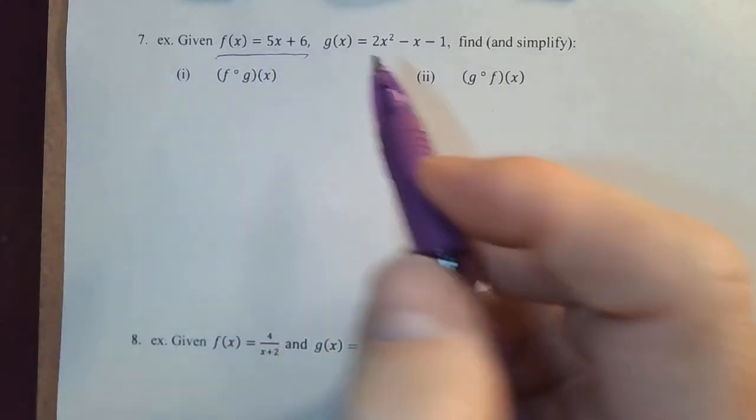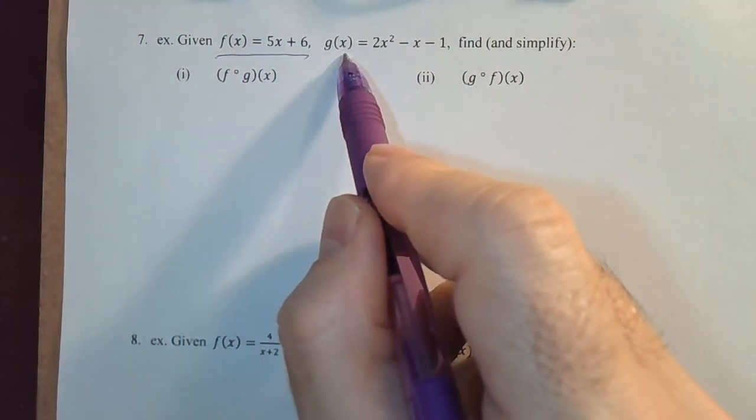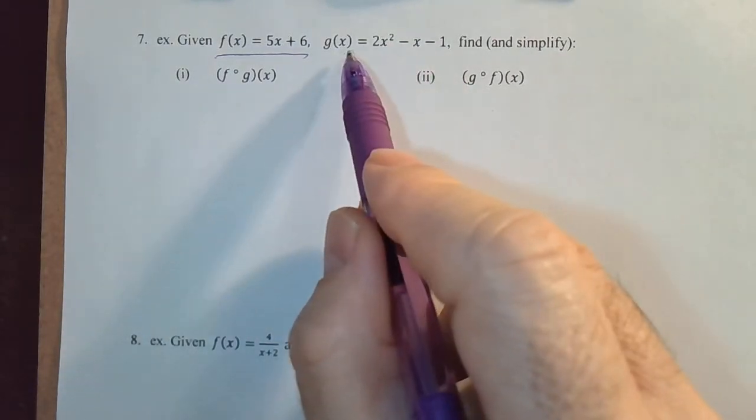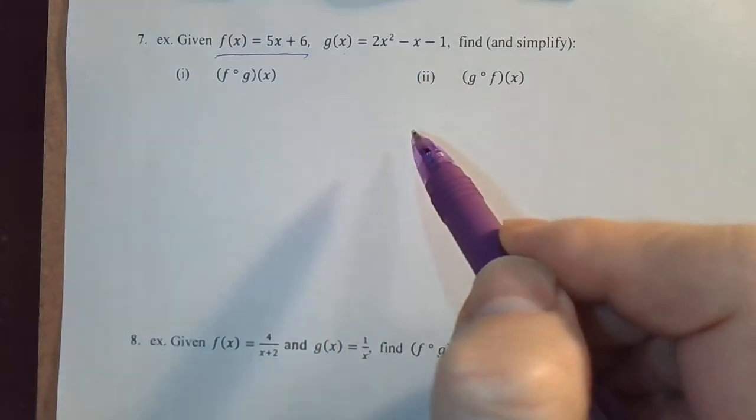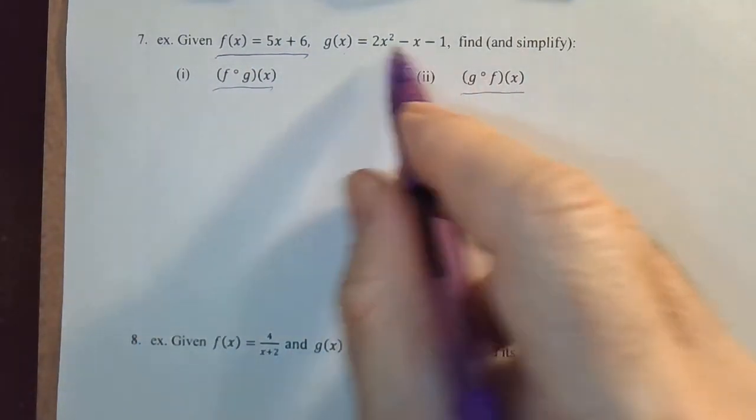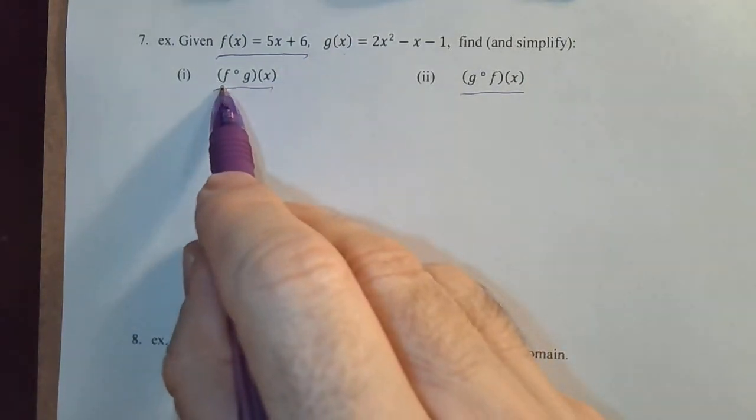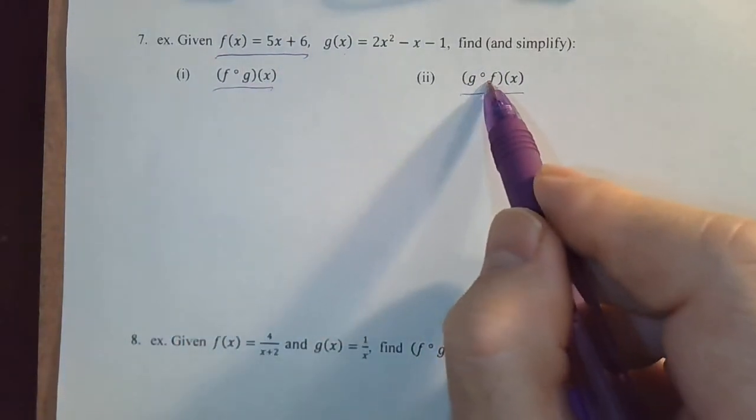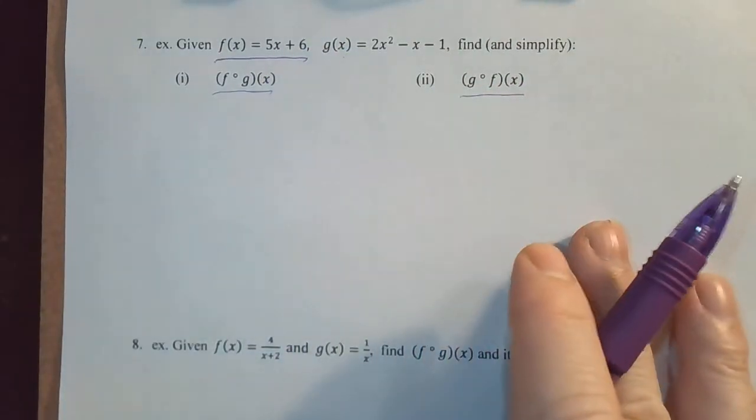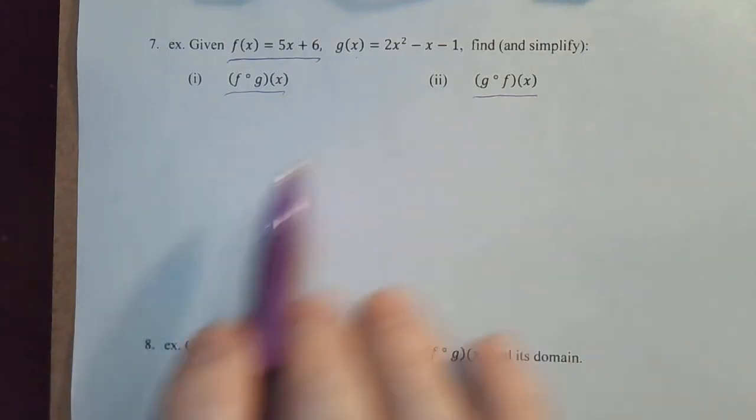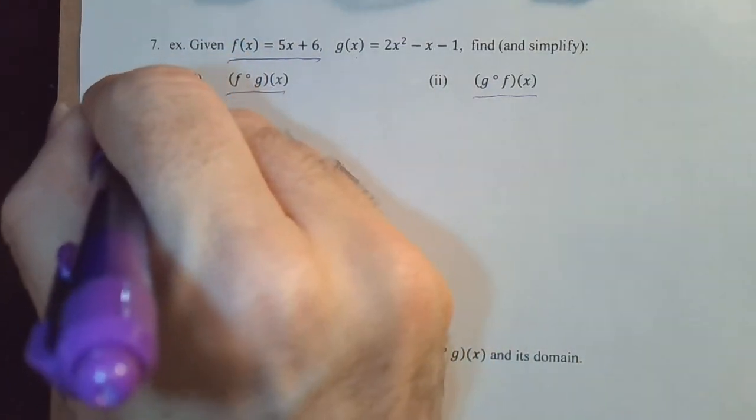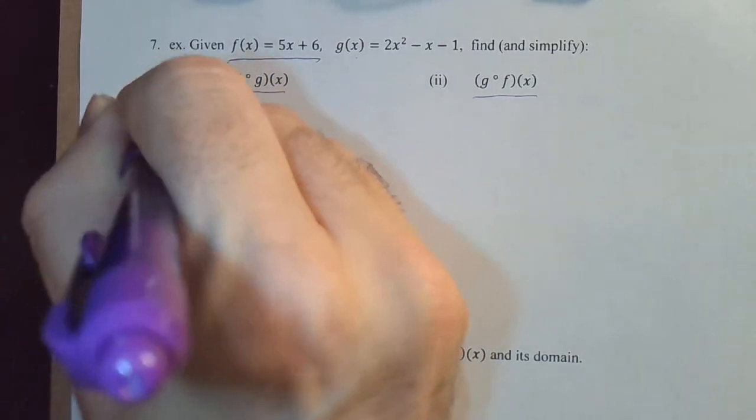And g of x, this looks like a quadratic, a second-order polynomial. g of x is 2x squared minus x minus 1. We want to find these two new functions. We're given two functions, we want to find f composed with g of x and g composed with f of x. If you think we're going to get the same result, we're not. So let's show that. Remember what f composed with g of x is.